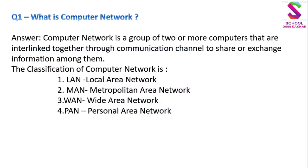What is Computer Network? A computer network is a group of two or more computers that are interlinked together through a communication channel to share or exchange information among them. कम्प्यूटर नेटवर्क दो या दो से अधिक कम्प्यूटरों का एक group है जो किसी संचार के माध्यम या साधन द्वारा आपस में जुड़े होते हैं, information को share और आदान-प्रदान करने के लिए।